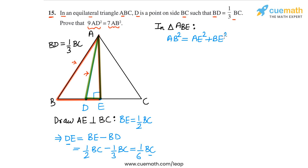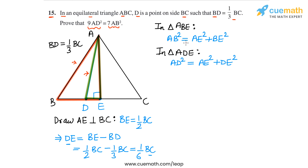Then in triangle ADE, the second right-angled triangle, AD is the hypotenuse, so AD² equals AE² plus DE². Now if you observe the right-hand sides of the two equations, both contain AE², so if we subtract the two equations we can eliminate AE² and relate AB² and AD². Let's call these equation 1 and equation 2.